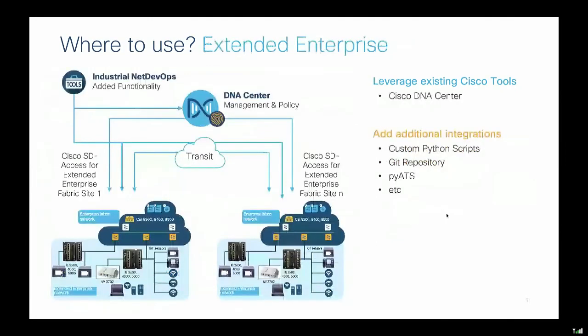For extended enterprise where DNA Center is already deployed, definitely use Cisco DNA Center with its extensive REST APIs. For additional integrations, use custom Python scripts to get configurations from Git. If you need to talk directly to your switch or some configurations aren't possible through DNA Center, you can also leverage the device-level APIs depending on the use case.